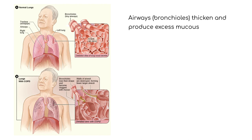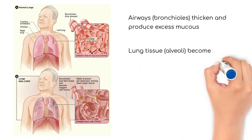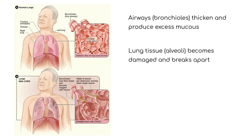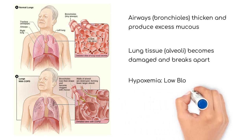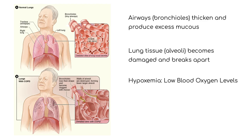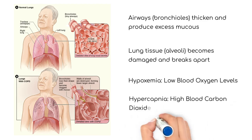As the disease progresses, the lung tissue becomes damaged, and the alveoli lose their elasticity, break apart, and form large areas that decrease the exchange of oxygen. This leads to low levels of oxygen, hypoxemia, and high levels of carbon dioxide, hypercapnia, in the blood.